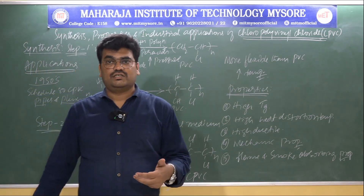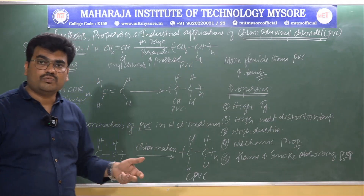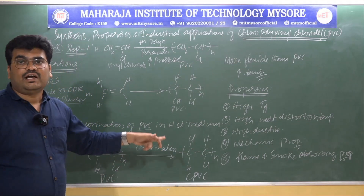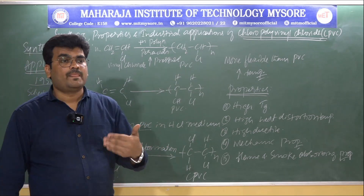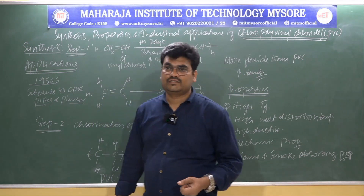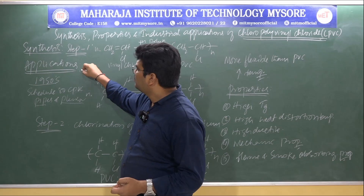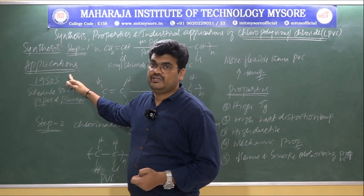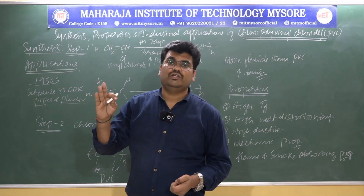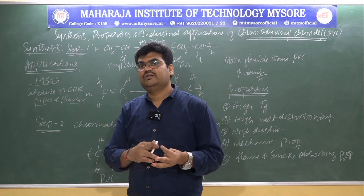CPVC can also be used to transport hot and corrosive fluids and inorganic acids. Almost in all fields, CPVC finds application. It is the third most commonly used thermoplastic polymer after polyethylene and polypropylene.